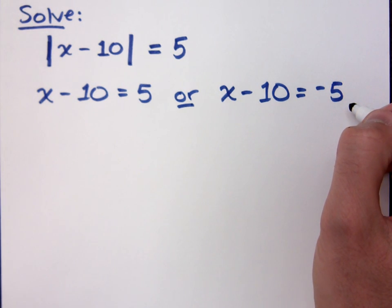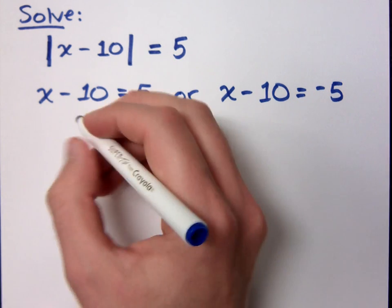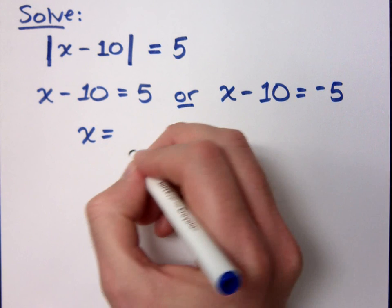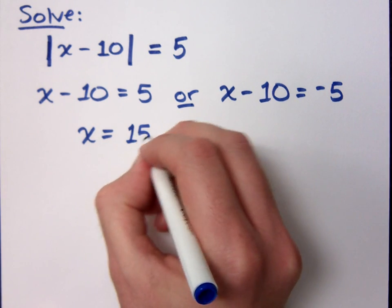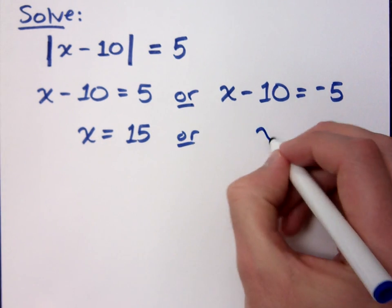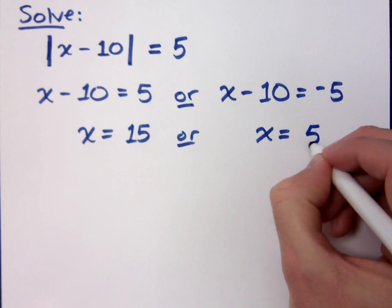So what I have, I've got two equations. So solve each of these equations and tell me what you get. X equals positive 15 or X equals positive 5.